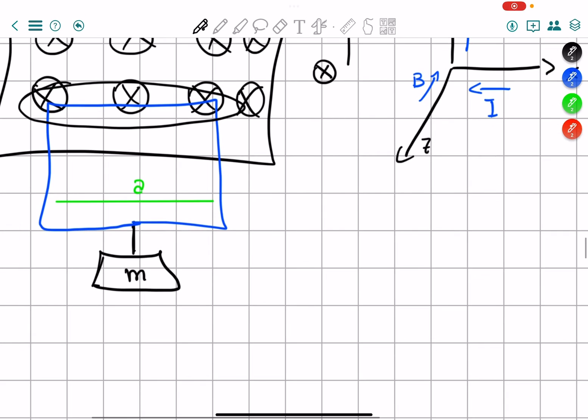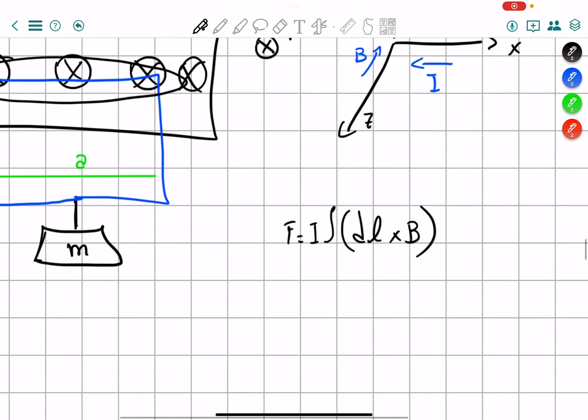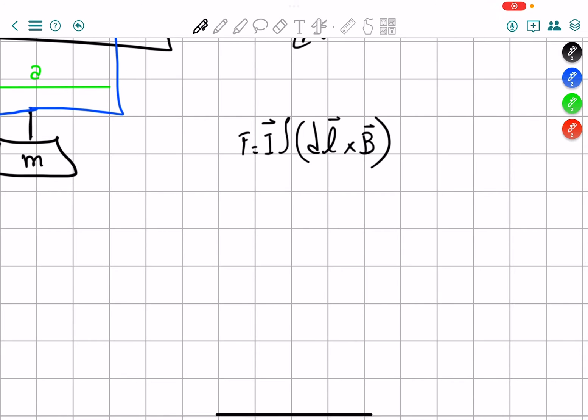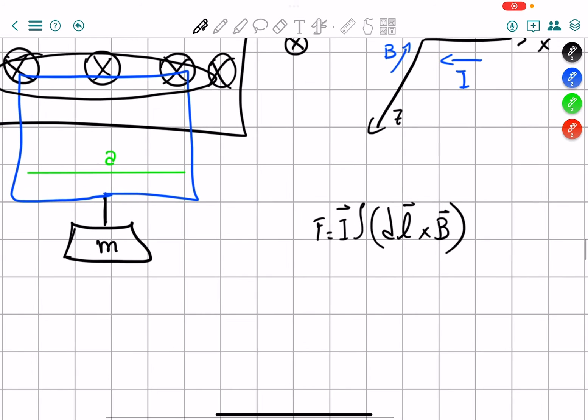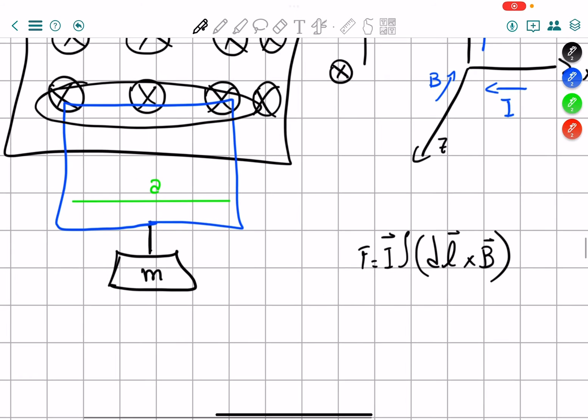So if we look at the formula that we found before, which is equals to the integral of i, actually we used the formula we used before, so i is already outside, dl cross b. Because dl of course is in the direction of the current, so it works for us.